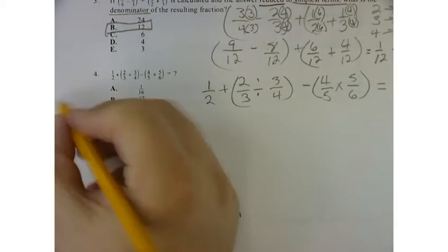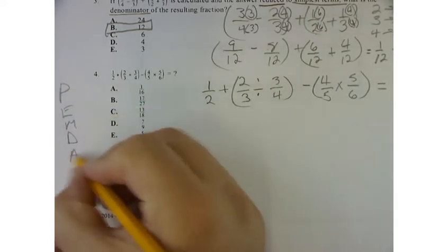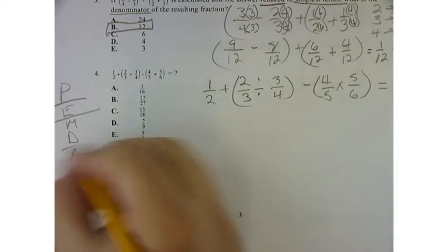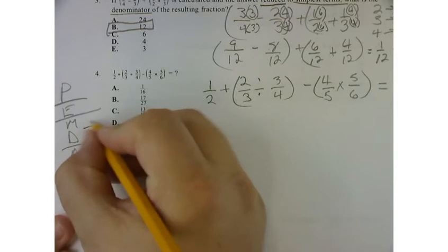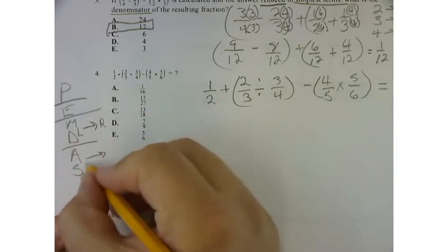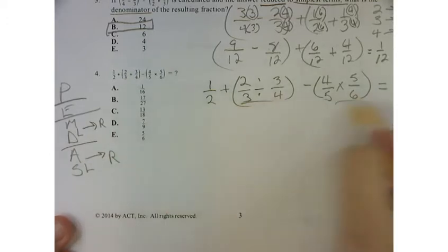So remember, please excuse my dear Aunt Sally. What that means is we do parentheses first, exponents second, multiplication and division are the same thing so we go from left to right, and addition and subtraction are kind of the same thing so again, we go from left to right. So I have some parentheses here and here. Let's take care of that first.